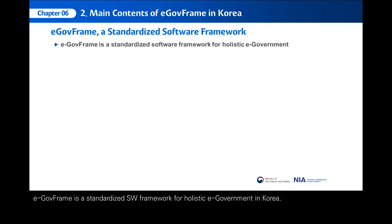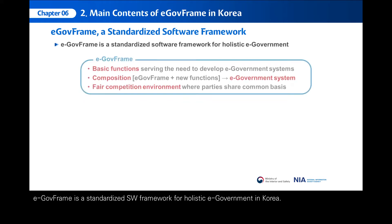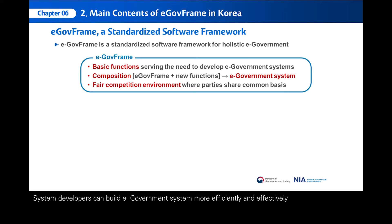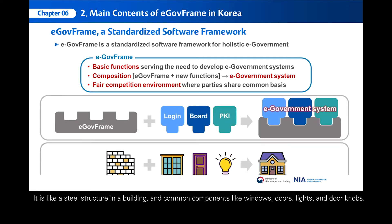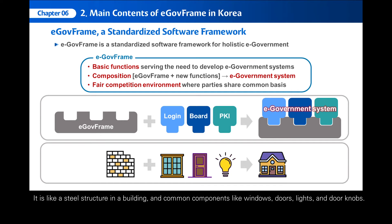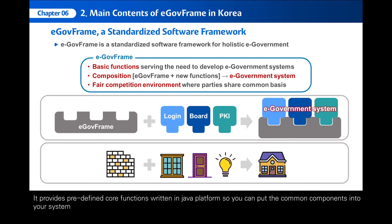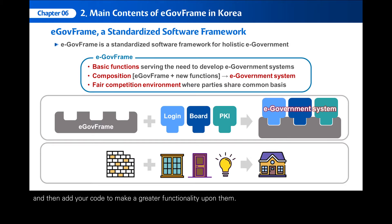E-GovFrame is a standardized SW framework for holistic e-government in Korea. System developers can build e-government systems more efficiently and effectively through the composition of E-GovFrame and new functions under the SW standard frame. It is like a steel structure in a building and common components like windows, doors, lights, and doorknobs. It allows you to build high-quality e-government services at low cost. It provides predefined core functions written in Java platform so you can put the common components into your system and then add your code to make greater functionality upon them.